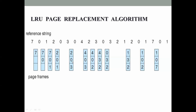Next page reference is 0, which is already in memory - no page fault. Next page reference is 4. Four is not in memory, generating a page fault. Pages in memory are 2, 0, and 3. Checking past references: 0, 3, 2 - two has not been used for the longest period of time. So 2 is replaced with 4. Memory now contains 4, 0, and 3.